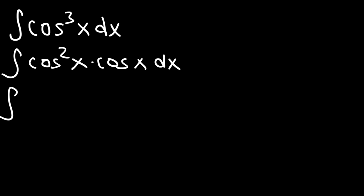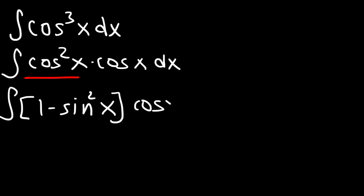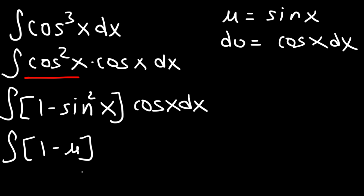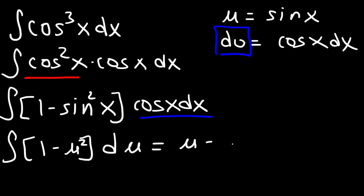So we're going to replace cosine squared with 1 minus sine squared, giving us 1 minus sine squared times cosine. Now in this form we can use u substitution. Let's make the u variable equal to sine x, so du is going to be the derivative of sine, which is cosine x times dx. Now let's replace sine with the u variable, and replace cosine x dx with du. The antiderivative of 1 du is u, and the antiderivative of u squared is u to the third over 3 using the power rule.